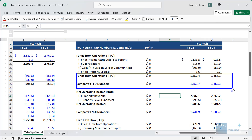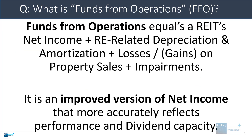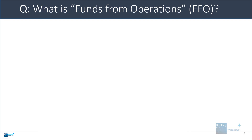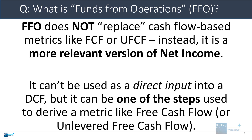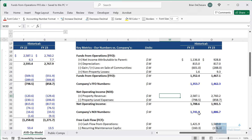We can also adjust for other types of losses such as casualty losses relating to insurance, FX, investments, or other items, and that gives us the FFO number. The company provides its own FFO, and our estimates are quite close to theirs. FFO is an improved version of net income that more accurately reflects a REIT's performance and its ability to issue dividends. It does not replace cash flow-based metrics like free cash flow or unlevered free cash flow — it's really an improved version of net income.